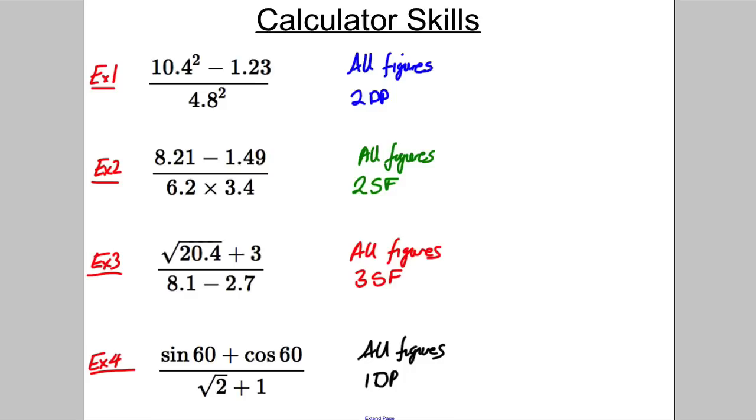Okay, so here we're going to do four examples. Make sure you write these on the front of a revision card and on the back of a revision card, do the exam questions I will show you afterwards. So example one, we're working out 10.4 squared subtract 1.23 squared, all of that divided by 4.8 squared. We're going to give our answer all the figures of our calculator and then round to 2 decimal places.